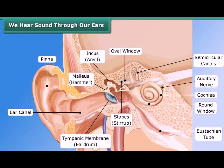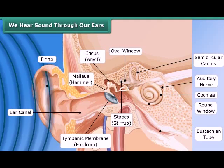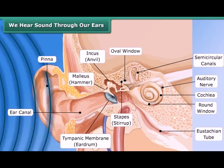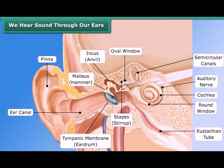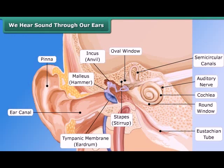We hear sound through our ears. The shape of the outer part of the ear is like a funnel. Sound enters and travels down a canal, at the end of which a thin membrane is stretched tightly, called the eardrum. Sound vibrations make the eardrum vibrate, and the eardrum sends vibrations to the inner ear, and through the inner ear it goes to the brain. This is how we hear sound.